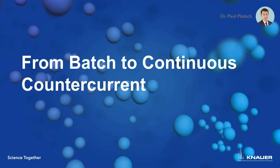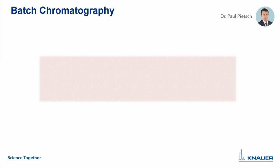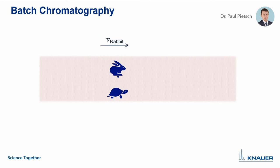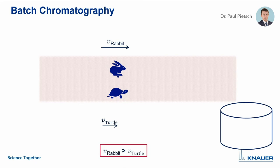Let's start with the topic from batch chromatography to continuous counter-current chromatography. You see a simplified illustration for single column batch chromatography. The stationary phase is considered as the ground — here, for instance, sand. Now let us consider two substances represented by a rabbit and a turtle. The rabbit is a substance with lower affinity to the stationary phase and the turtle with higher affinity. They run a race to the right side, where they fall into a vessel. The rabbit is faster than the turtle and is the first to reach the right side.